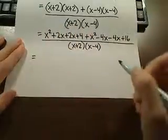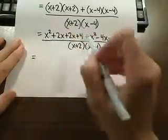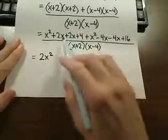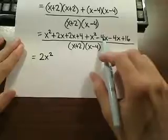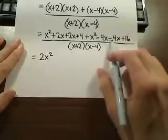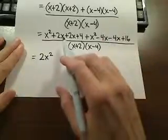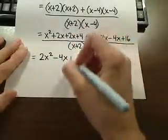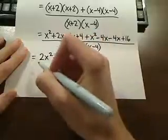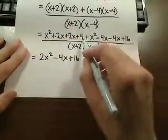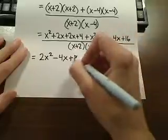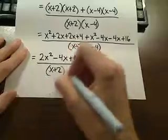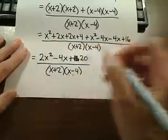So let's go ahead and collect like terms now. X squared and x squared is 2x squared, the 2x, the 2x, that's 4x, and then over here we have negative 8x when we collect those, so positive 4x, negative 8x is going to be a negative 4x, and then we have our plus 16. Oh, excuse me, a like term with the 16 is the 4 there, so this is actually plus 20.